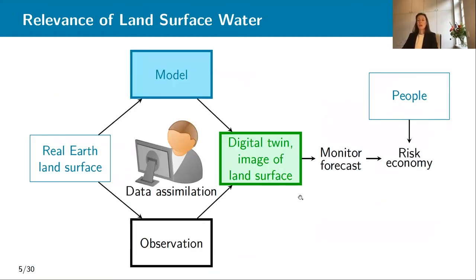We as scientists have two main tools to understand our Earth or the land surface: models and observations. In the best case, we combine both and we make what we call a digital twin. So we mimic our Earth or we make an image of our land surface. From here, we go into monitoring and forecasting. You can match that with people's activities, economic benefits, costs, risk assessments. My focus will be on making this image of the land surface to the best of our ability.